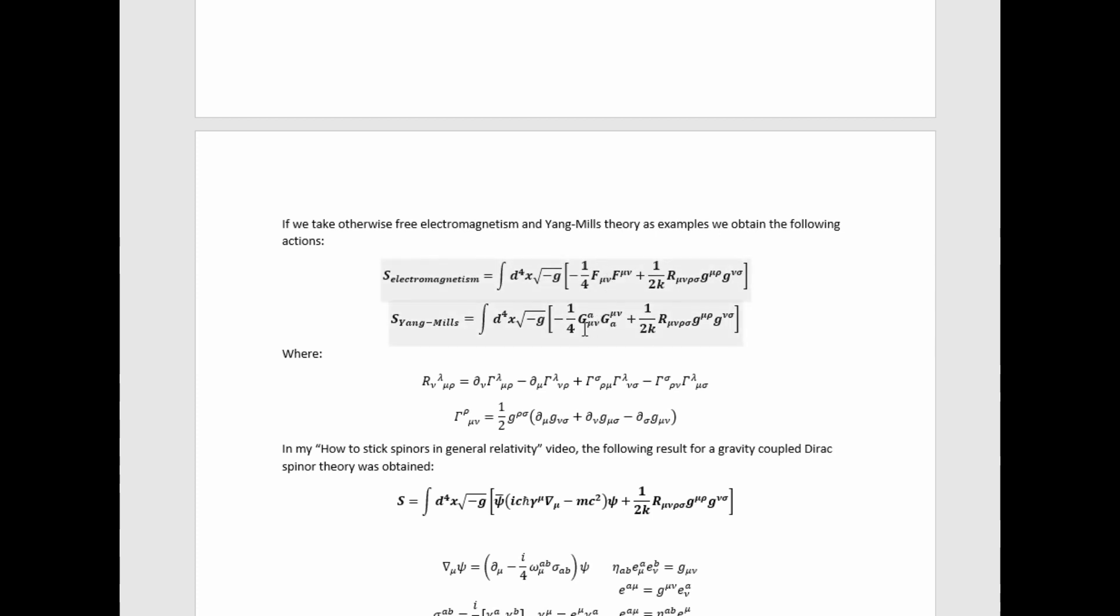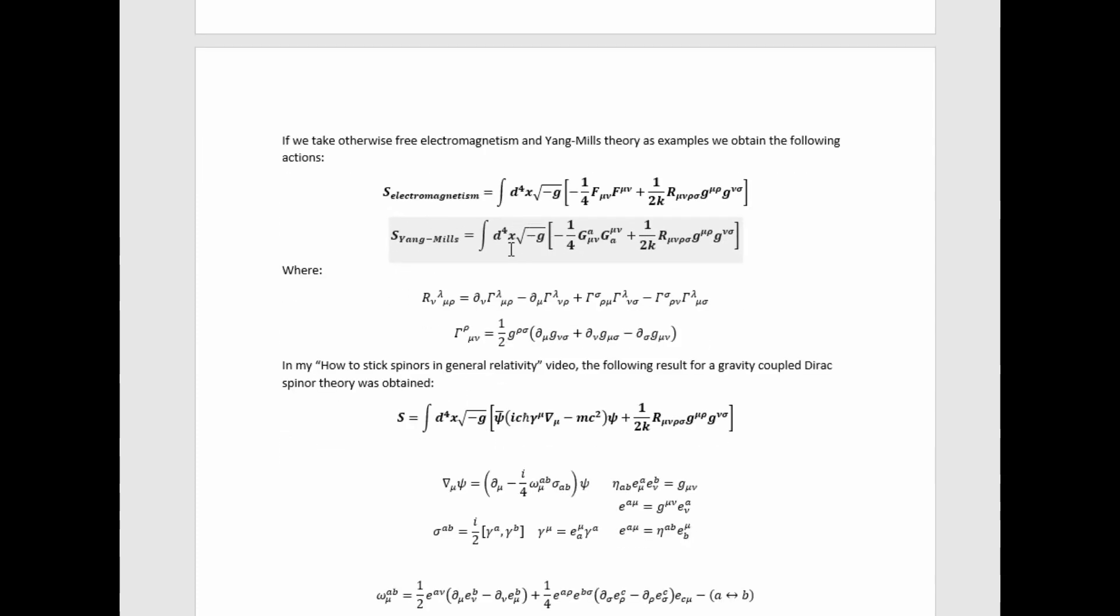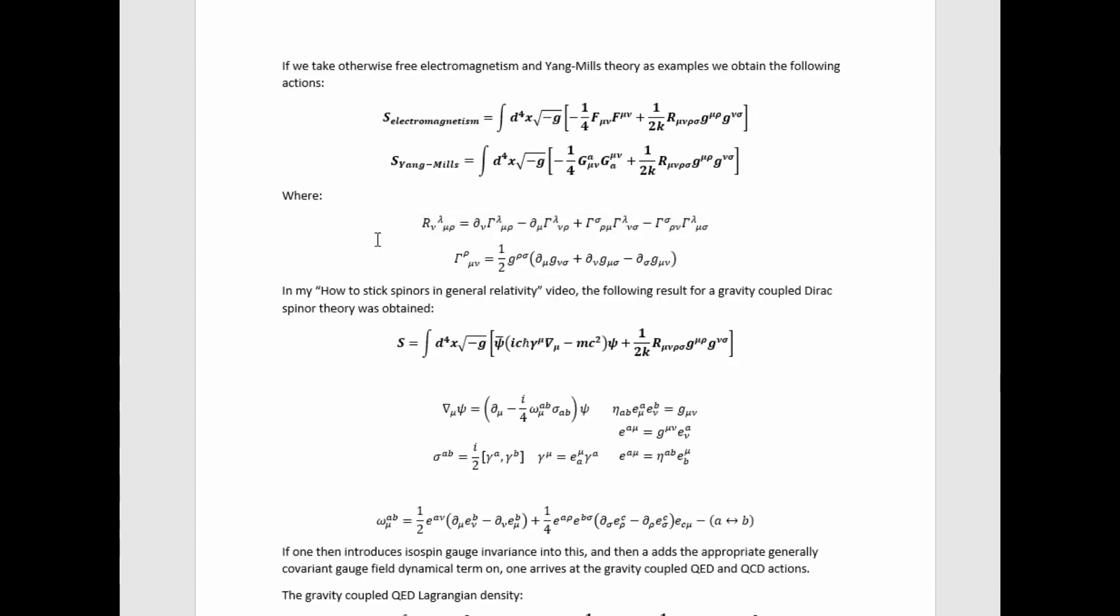And we have these factors of the square root of negative determinant of the metric so that the Lagrangian densities transform as scalar densities under GL4 and the actions are therefore generally covariant. So basically the variation under coordinate transformations of this factor cancels the variation of this factor here. And of course we obviously have this formula for the Riemann curvature tensor in terms of the Christoffel symbols,